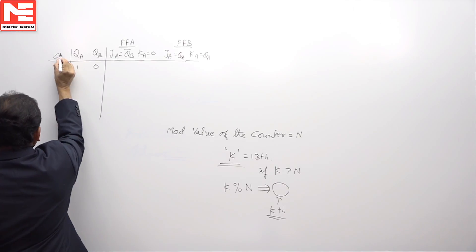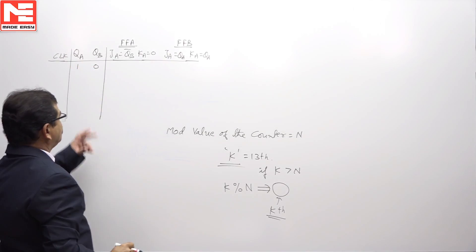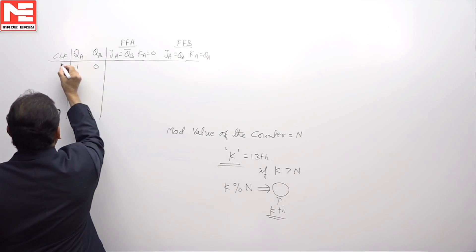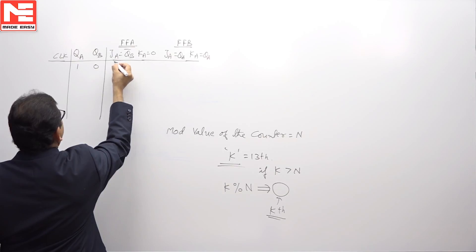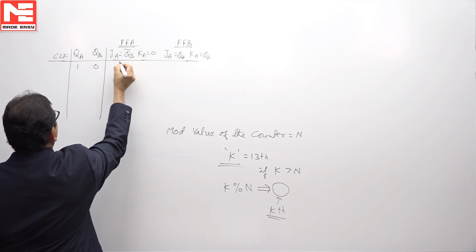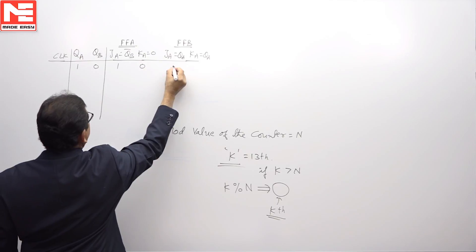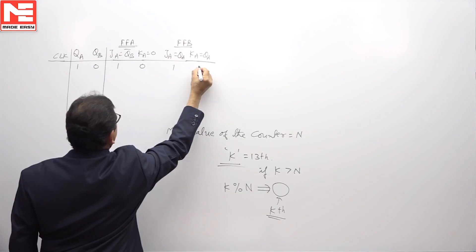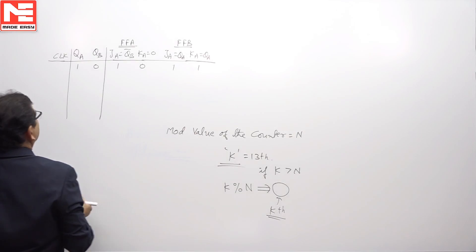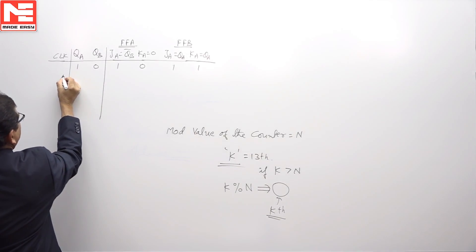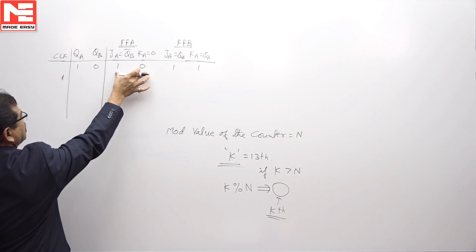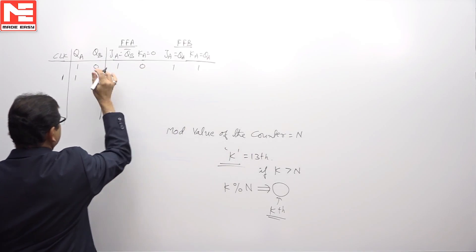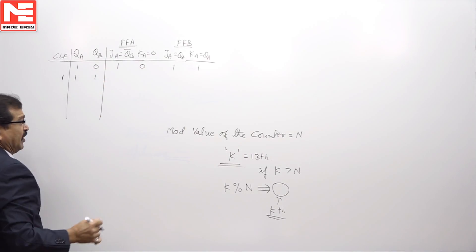We need to check after how many clock pulses the circuit returns to its initial state. Before the first clock pulse, flip-flop A inputs are QB bar = 1 and KA = 0, and QA = 1. After the first clock pulse, because of the 1,0 inputs, flip-flop A output is 1. Because of the 1,1 inputs, flip-flop B output toggles to 1.